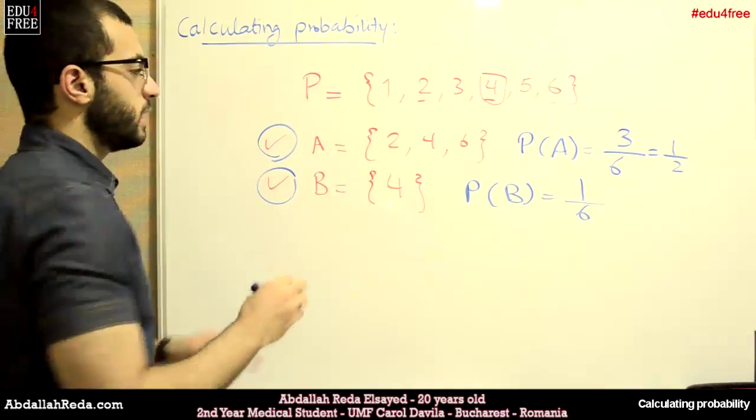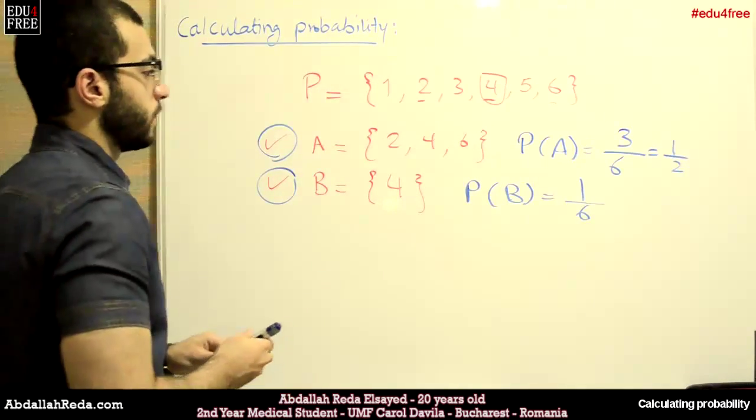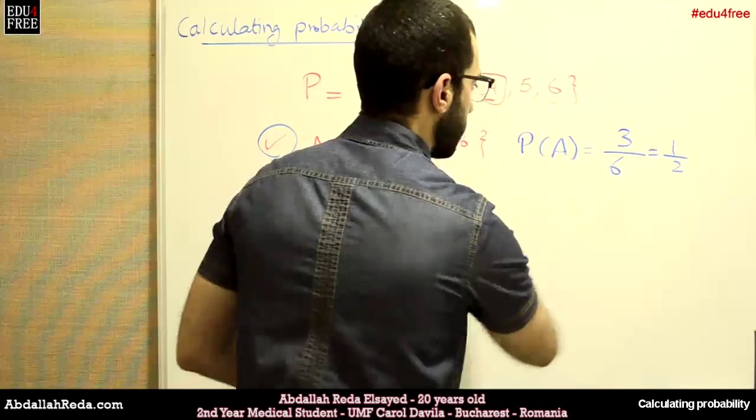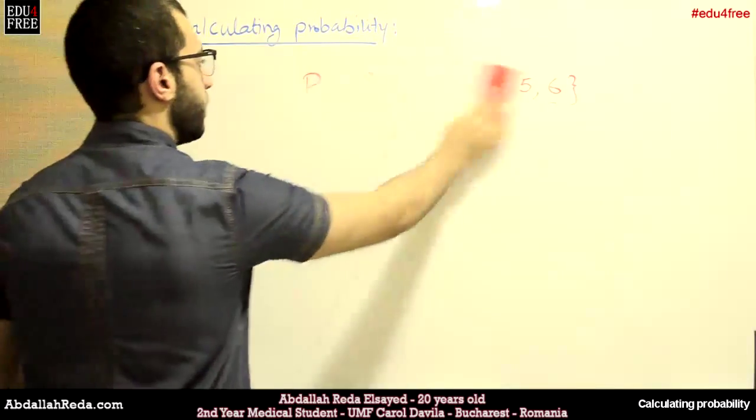So this is how to calculate the probability. It's that simple. Now let's have another example.